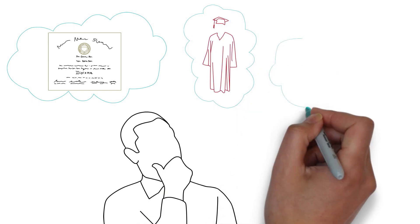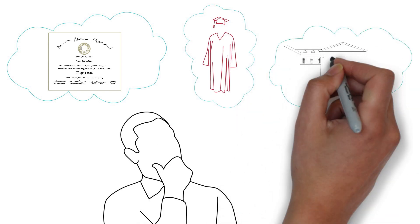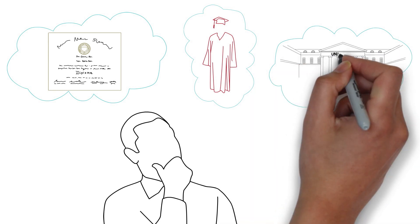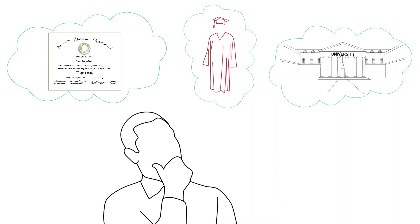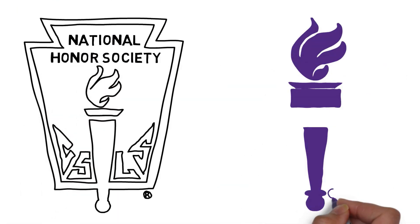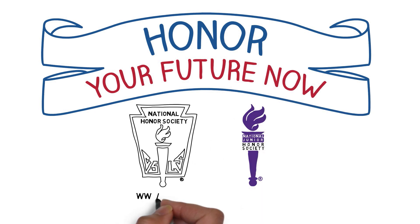Additionally, for NJHS members, the Outstanding Achievement Awards will provide 500 students annually with a chance to start saving for college. The National Honor Society and National Junior Honor Society. Honor your future now.